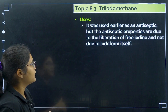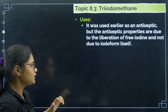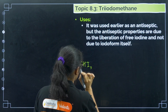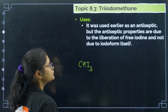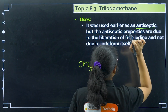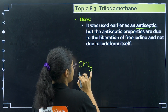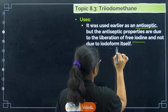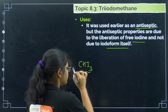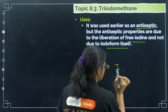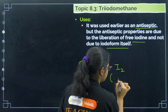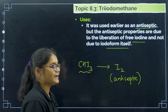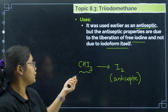Coming to the third compound, triiodomethane — CHI₃, also called iodoform. It is used as an antiseptic. However, the antiseptic property is not because of CHI₃ itself; it is due to the liberation of free iodine. When iodoform is present, it gives free iodine, and this free iodine is responsible for the antiseptic properties.